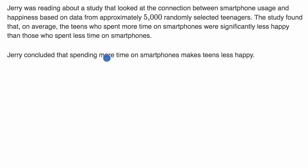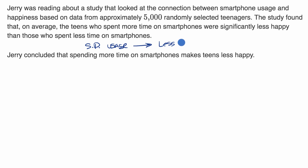Jerry is concluding that smartphone usage makes teens less happy. So he's assuming there's a causal connection — that smartphone usage causes teens to be less happy. But can he actually make that conclusion from this study based on how it was designed?